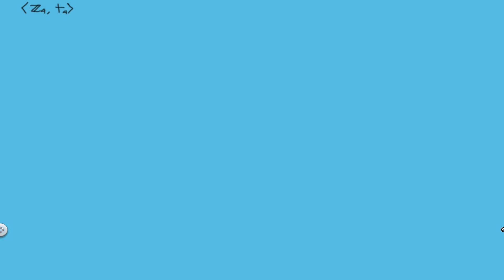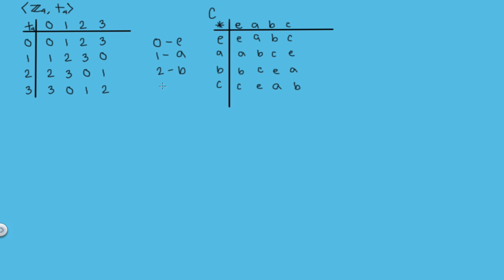Now let's look at the group containing the set of integers modulo 4 with addition modulo 4. The binary operation table for this group is shown here, and if you compare it with the group which we call C, by changing 0 to E, 1 to A, 2 to B, and 3 to C, you can see that these groups are clearly isomorphic.